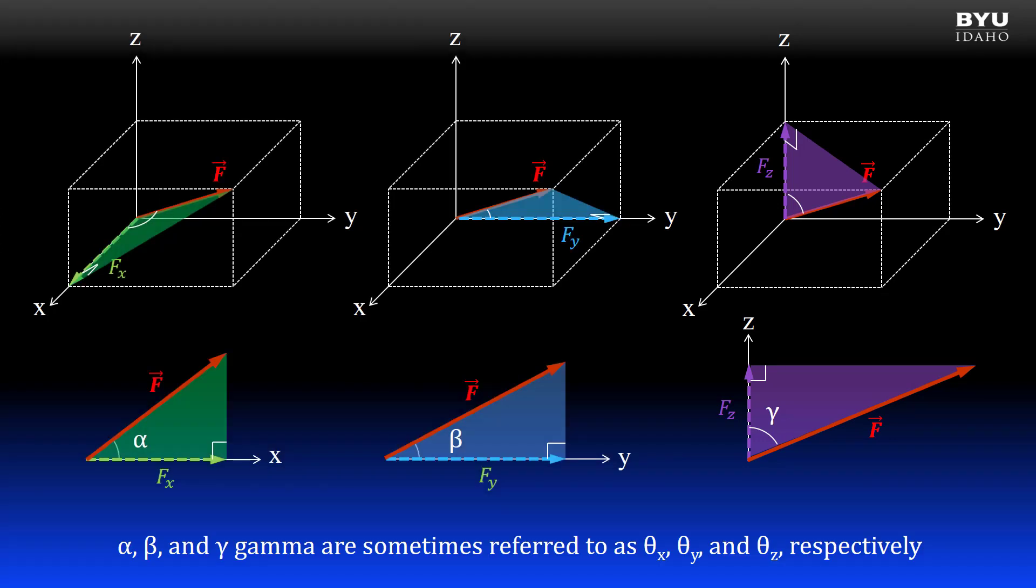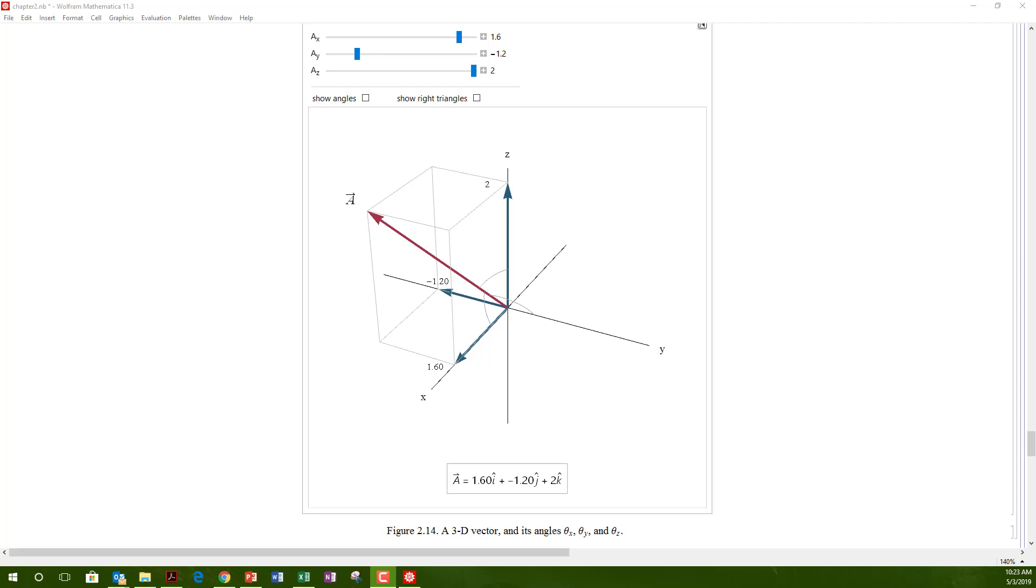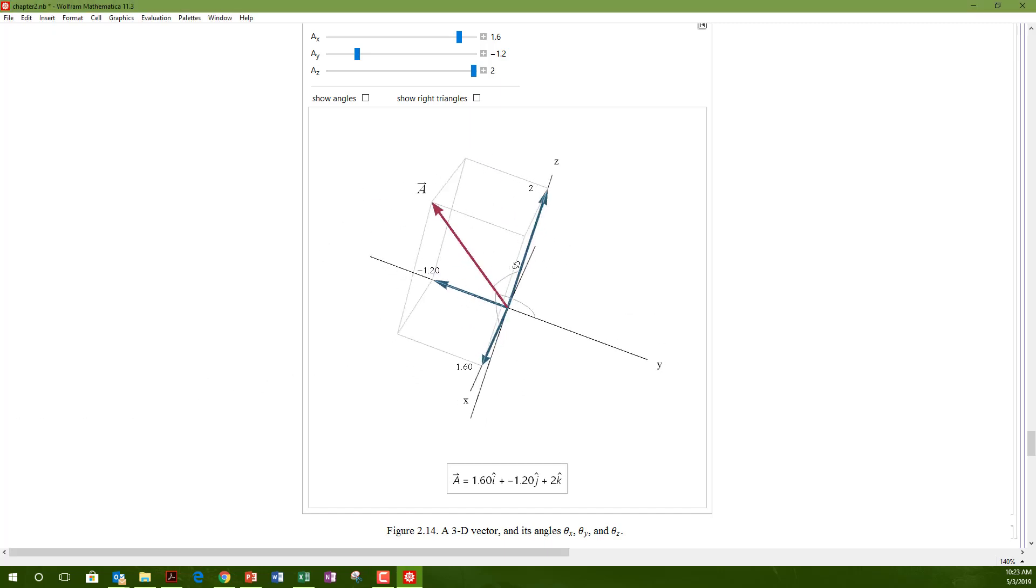Note that alpha, beta, and gamma are sometimes referred to as theta x, theta y, and theta z. Here is a dynamic figure of a three-dimensional vector that you have access to through the course materials. The tool allows the user to rotate the image, which is helpful for visualizing the vector in 3D space.